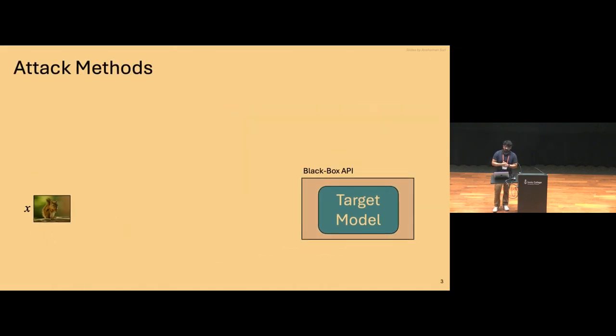And when I mention black box setting, what I really mean is that when you're trying to attack the target model, all you get is API access, so you give your inputs to the model, and you get in return some sort of feedback from the model.